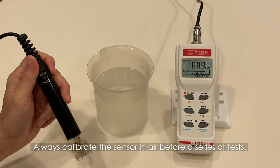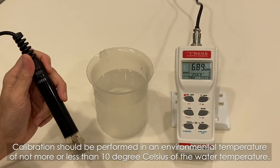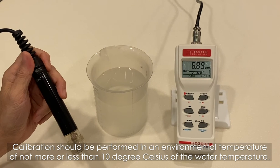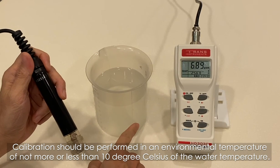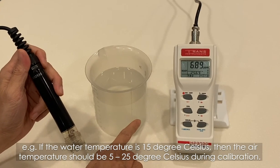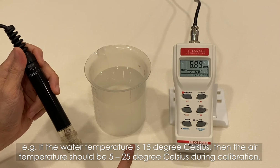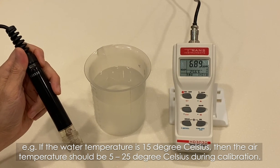Always calibrate the sensor in air before a series of tests. Calibration should be performed in an environmental temperature of not more or less than 10 degrees Celsius of the water temperature. For example, if the water temperature is 15 degrees Celsius, then the air temperature should be between 5 or 25 degrees Celsius during calibration.